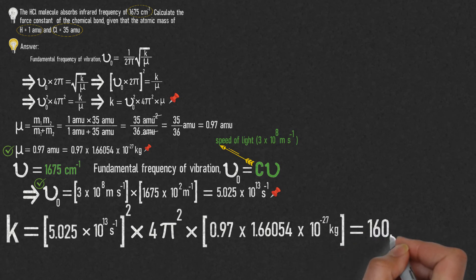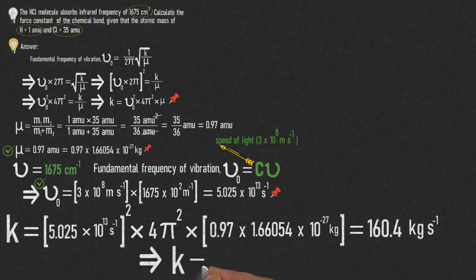That is equal to 160.4 kg/s². If we convert it into SI unit, we get force constant k = 160.4 N/m.